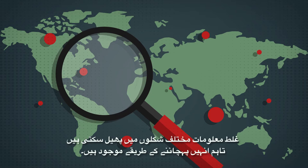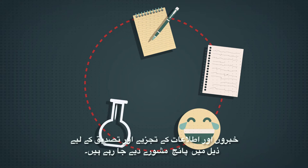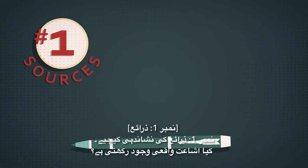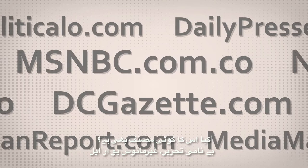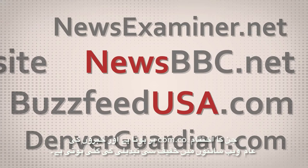Here are five tips to analyze and validate news and information. Number one: identify the sources. Does the publication even exist? Is there an author? Be cautious of no bylines and strange URLs, like those ending in .com.co and slight variations on common news websites.